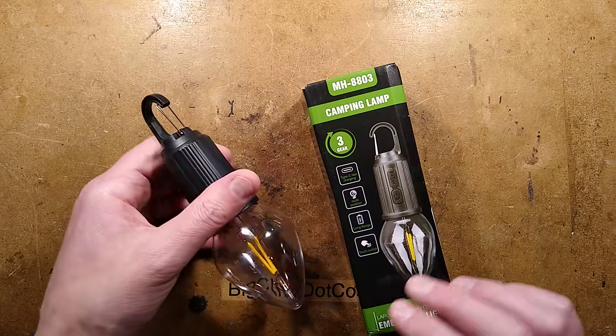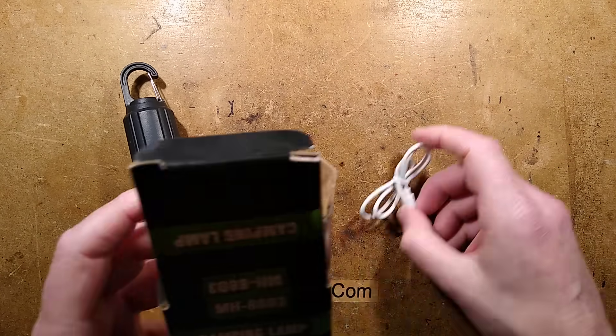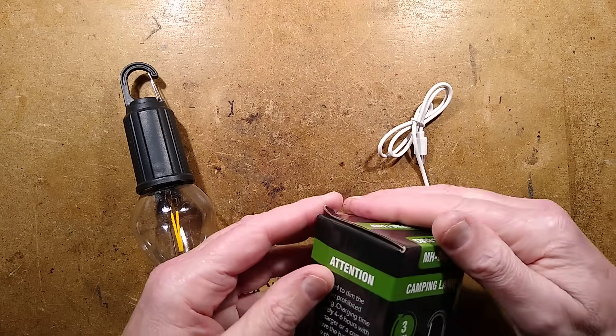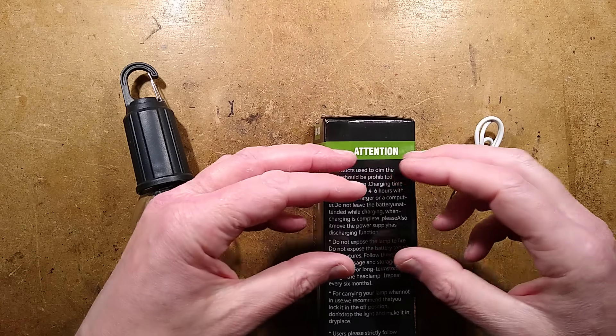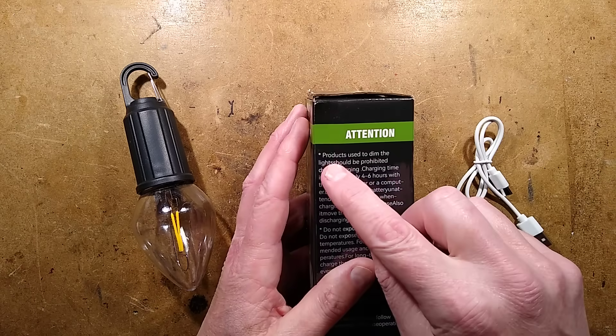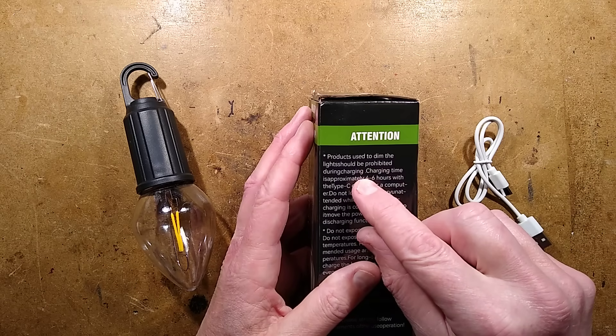It comes in a box like this with the light itself and a USB-C charging cable and has helpful text on the side that is completely all just mushed together. They've removed a lot of the spaces and it says products used to dim the lights should be prohibited during charging. That doesn't make sense.